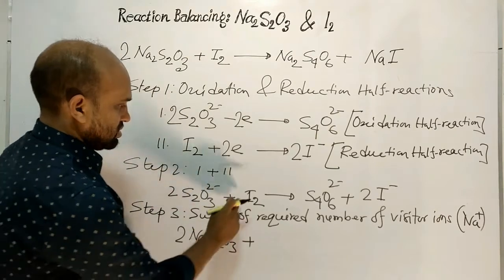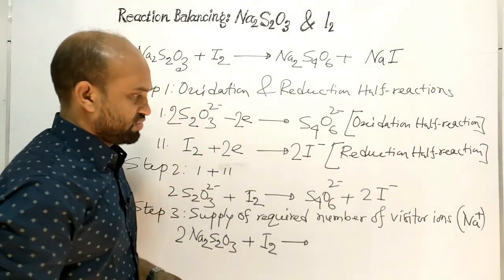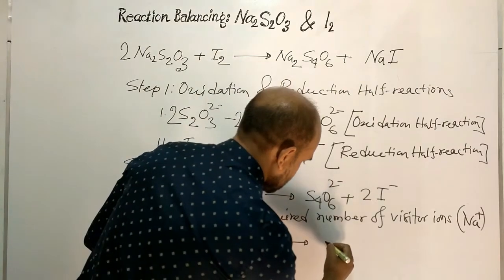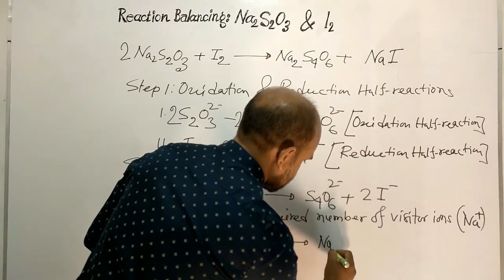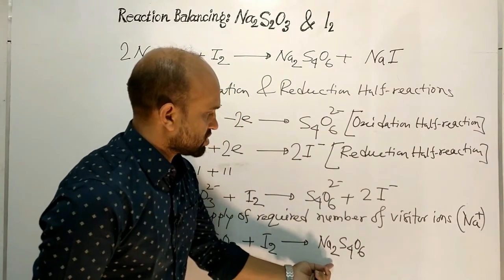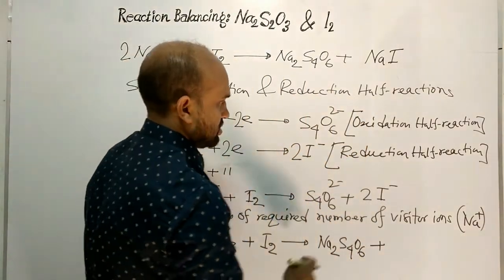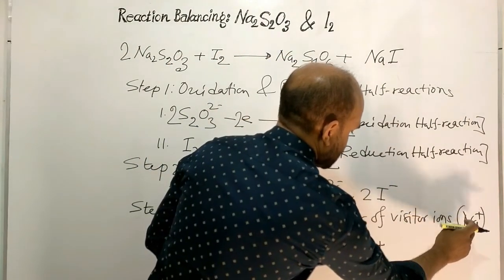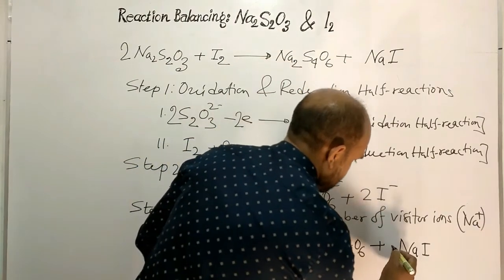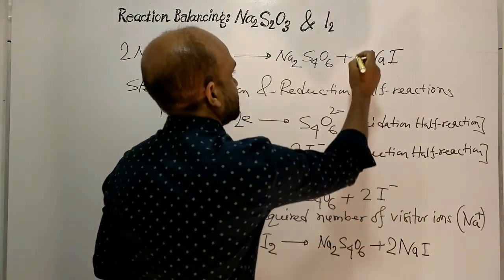Iodine is a neutral molecule, so no additional coefficient is needed before it. On the right side, tetrathionate ion combines with sodium ion to form sodium tetrathionate with a coefficient of 1. The iodide ion combines with sodium ion to form sodium iodide. Since there is a coefficient of 2 before the iodide ion, the coefficient before sodium iodide is also 2.